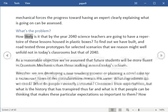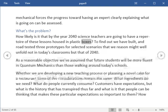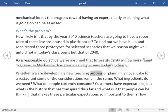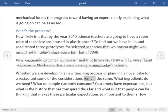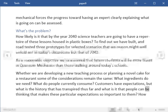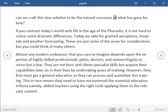What's the problem? How likely is it that by the year 2040 science teachers are going to have a repertoire of these lessons housed in plastic boxes? To find out we have built and road tested three prototypes for selected scenarios that we reason might well unfold not in today's classrooms but that of 2040. As a reasonable objective we've assumed that future students will be more fluent in quantum mechanics than those walking around today's schools. Whether we are developing a new teaching process or planning a novel cake for a restaurant some of the considerations remain the same. What ingredients do we need? What do people currently consume? Customers have expectations but what is the history that has transpired thus far and what is it that people can be thinking that makes these particular expectations so important to them? How can we craft this new solution to be the natural successor of what has gone before?